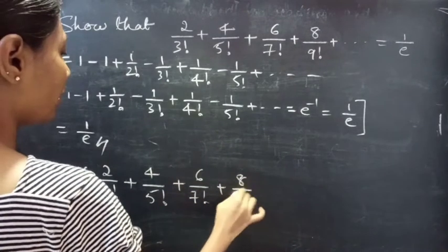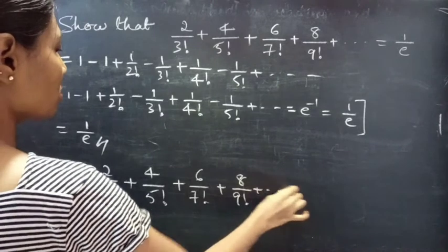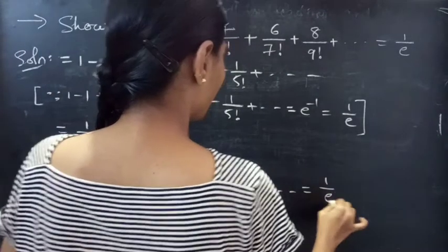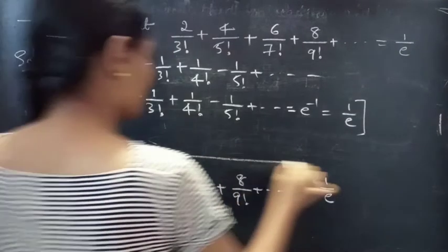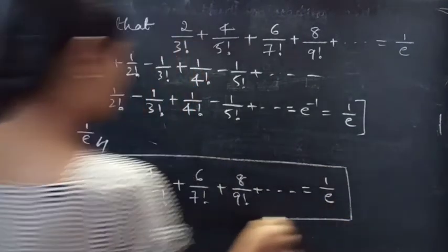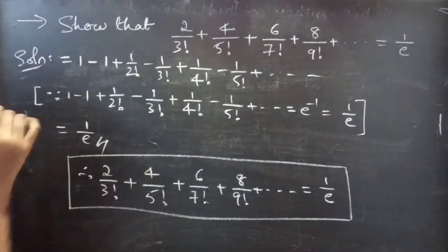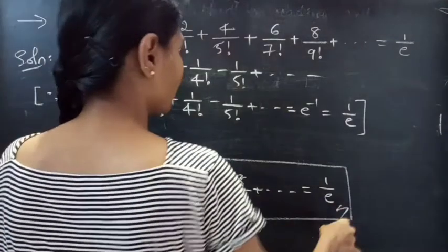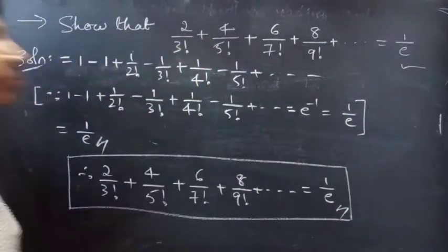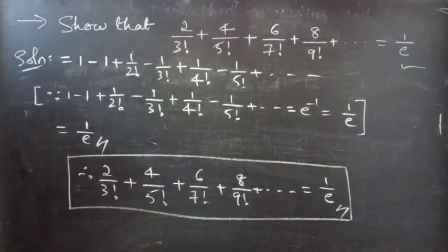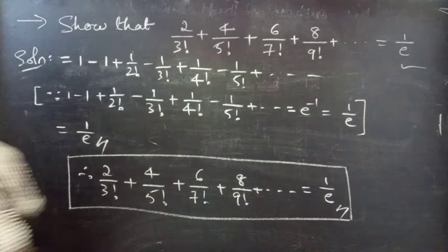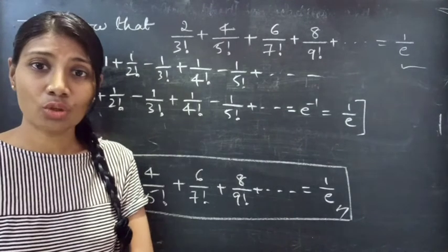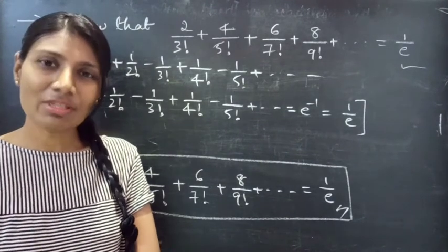So 2/3! + 4/5! + 6/7! + 8/9! + so on equals 1/e. This completes the problem. We have seen a problem from exponential series in this video. Hope you will understand. We will see you in the next video.